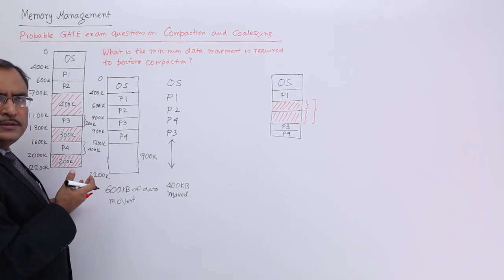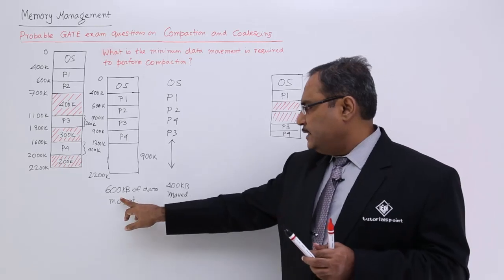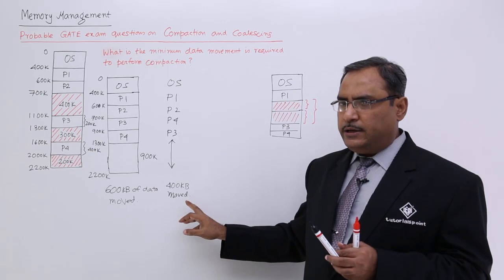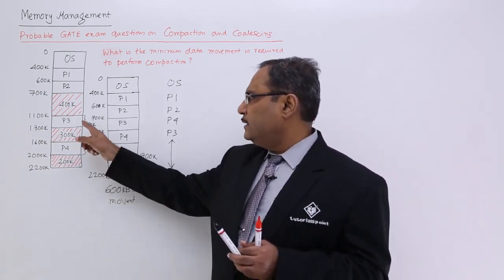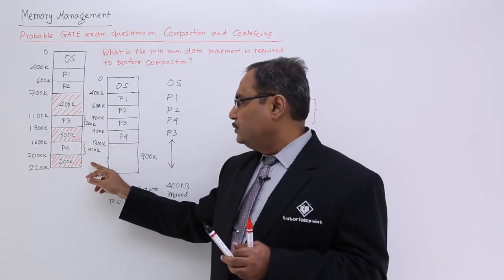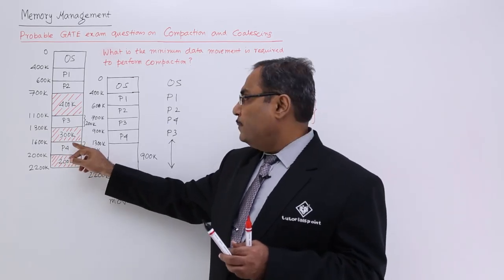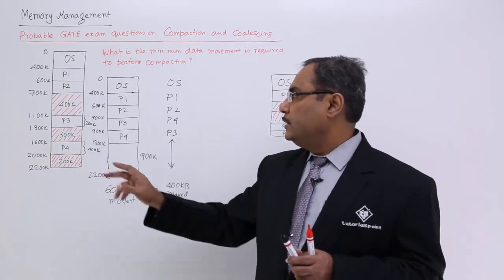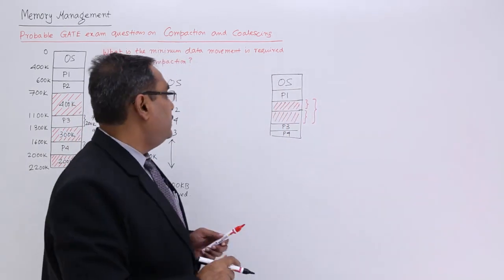So, can you suggest any other policy, where the data movement will get decreased from 600 to 400 KB? That is you see, that is another thing we can do, that this P3 is having a size of 200 KB. So, if this P3 can be moved to this particular place, it is also having a size of 200 KB. So, what will happen, here we will be having a contiguous free space of 900 KB. So, 400 plus 300 plus 200, so 900 KB.